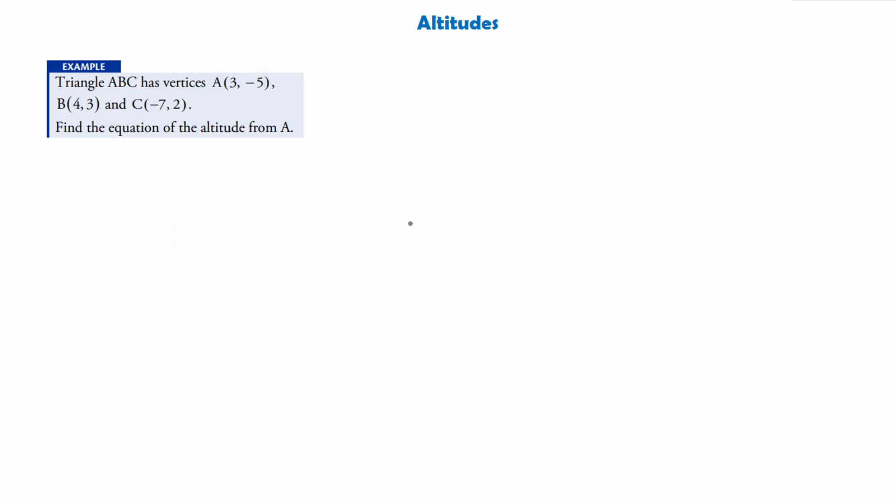Now, like we did with medians, when we're trying to work out an altitude or the equation of an altitude, it's best just to do an example. And we're going to work out the equation of the altitude from A of the triangle A, B, C, which has these vertices as follows. And again, like medians, we're going to be doing three steps to work out the altitude from A.